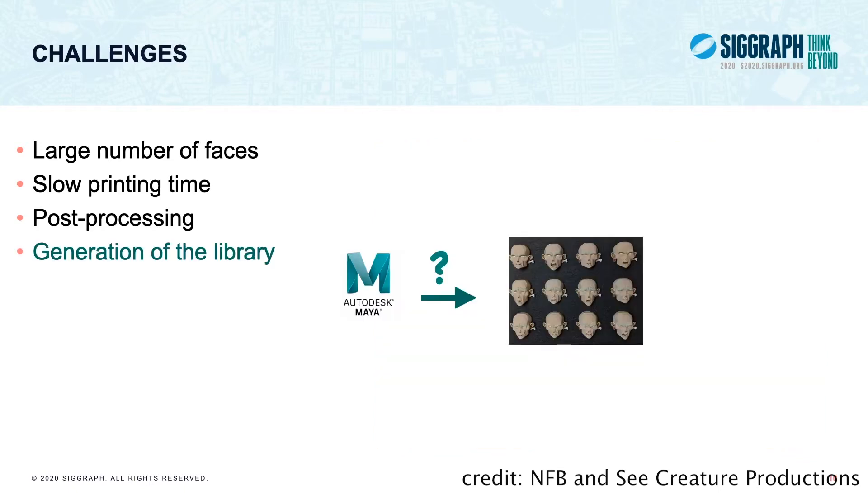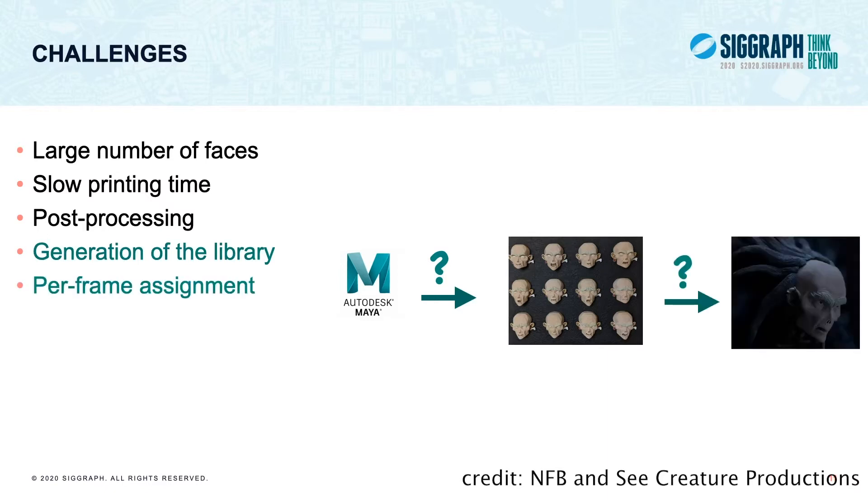It's not immediately clear how does one generate this library of faces in the first place. What expression should go into the library, and what should the size of the library be? If you initially digitally animated your face in Maya, for example, then you could 3D print every frame, but that leads to a lot of repetition, where the same expression is printed multiple times, and therefore a lot of material is wasted. It's also not clear how to assign a face from the library to a particular frame.